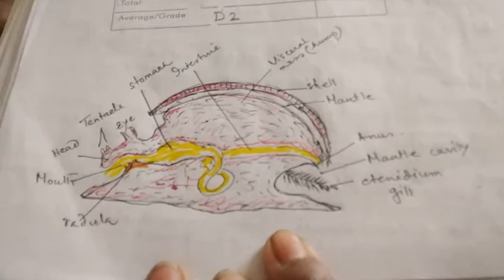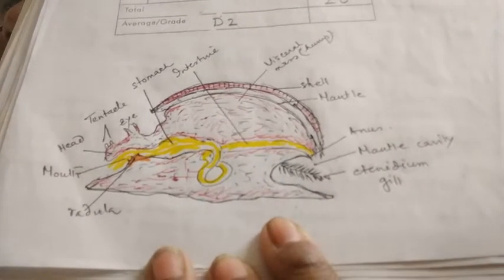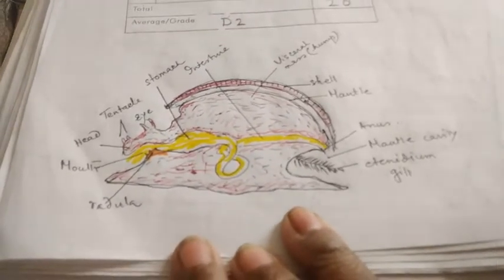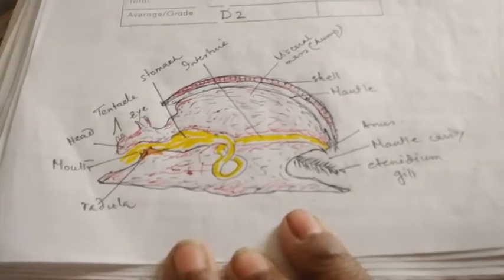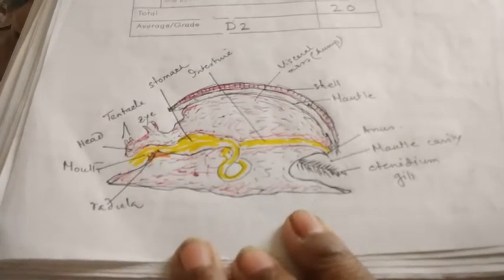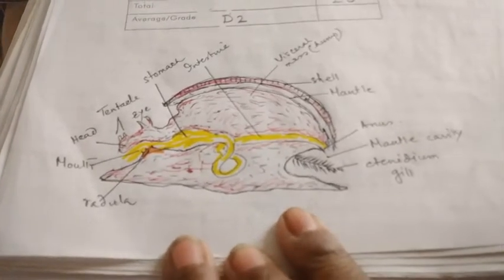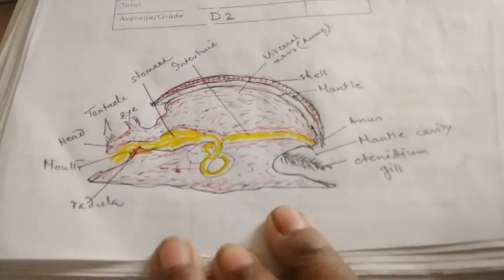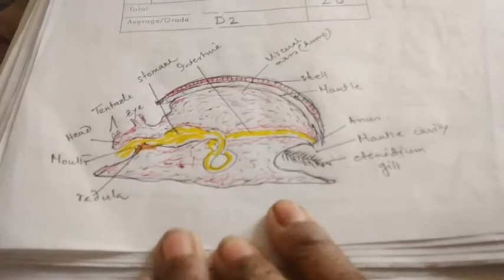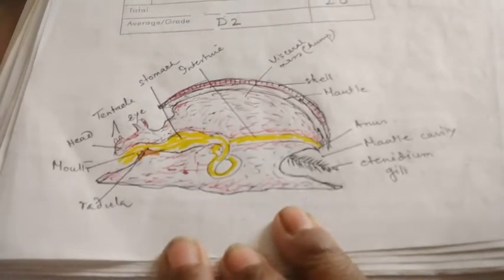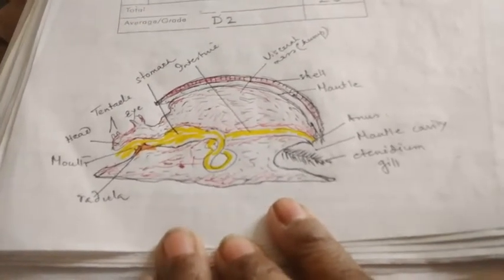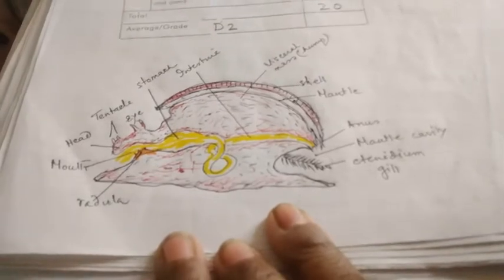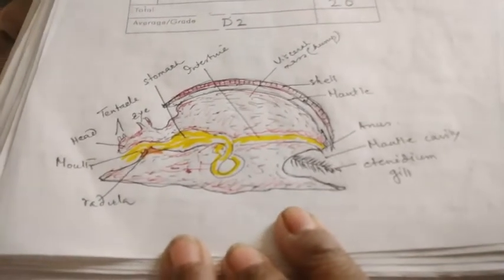Circulatory system is open type. In annelida we have closed type of circulatory system but here the circulatory system is open type. Only in few like octopus they have closed type, but otherwise generally they have open type of circulatory system. The blood contains respiratory pigment which is copper containing respiratory pigment called hemocyanin, a copper containing blue respiratory pigment.